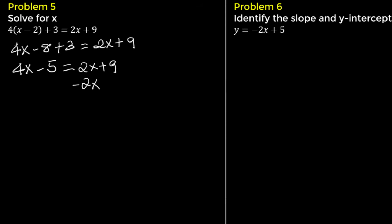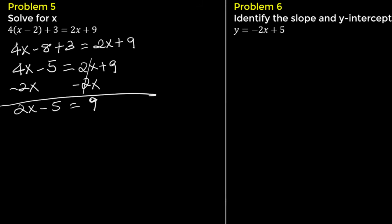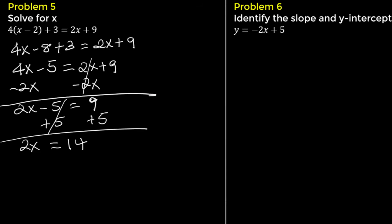Subtract 2x from both sides. We have 2x minus 5 equals 9. Add 5 to both sides: 2x equals 14. Divide both sides by 2. The solution is x equals 7.